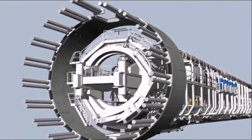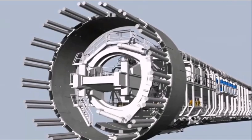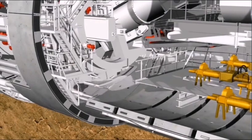Each completed tunnel ring consists of several segments, two lateral elements and the key segment which is installed last. The positioning of the segments always follows the same routine.